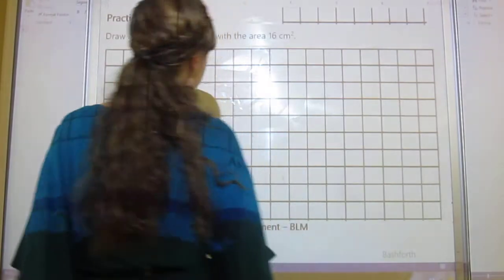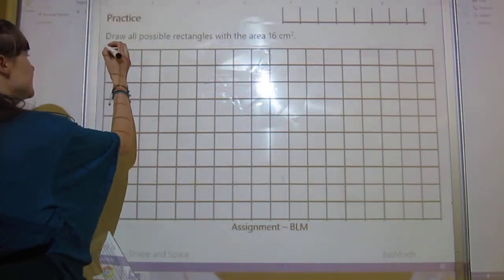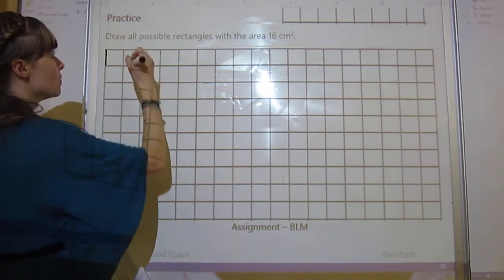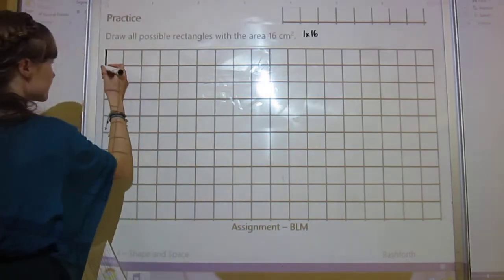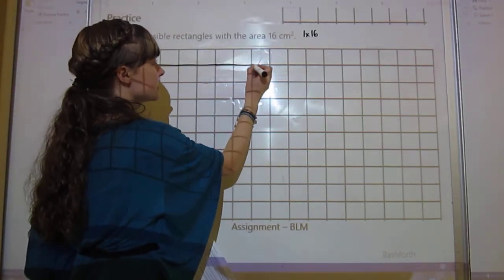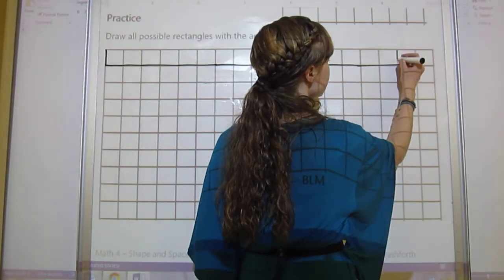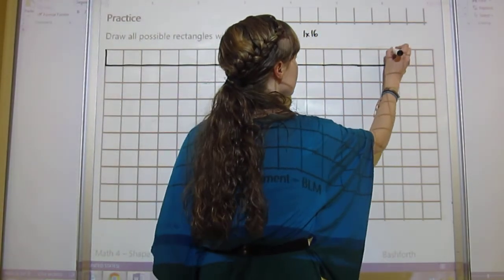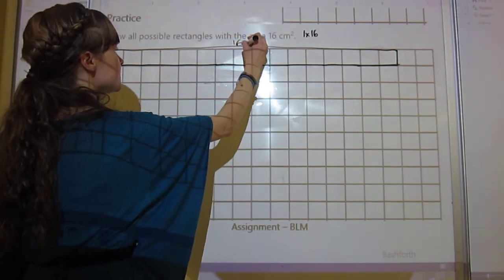All right, so let's do this. I made sure this one could fit 16. We've got 1 times 16, so this is 1, and we've got 2, 4, 6, 8, 10, 12, 14, 16. So we could have a 1 by 16 centimeter rectangle.